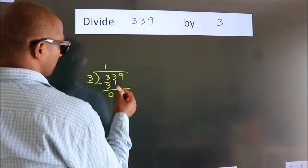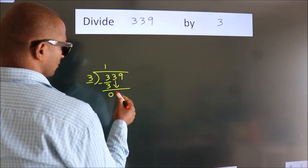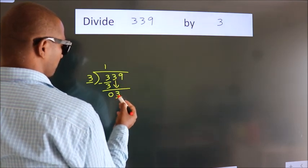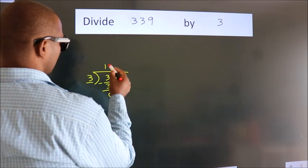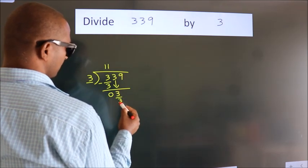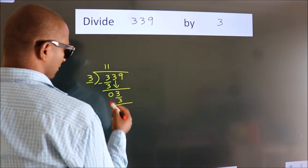After this, bring down the beside number. So 3 down. When do we get 3? In the 3 table. 1 three is 3. Now we subtract.